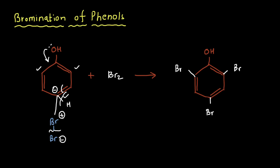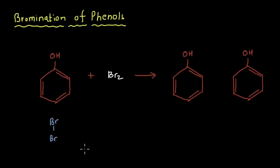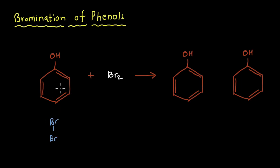Now the question is: what if we want bromine only at the ortho position or only at the para position? What changes can we make to get these products? In the earlier reaction, the polar solvent water was helping break the Br-Br bonds easily by pulling both bromines apart. So if we don't allow these bromines to break apart easily, only a few will be available in the solution. And since phenol is reactive, it will attach with the bromines available, but with very few bromines available, we may not get multiple substitutions on the same phenol.